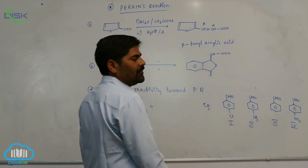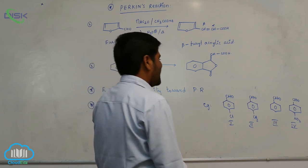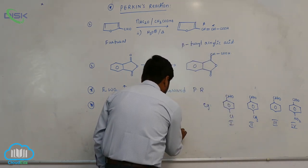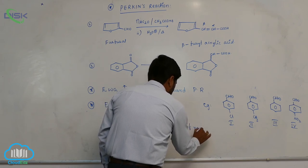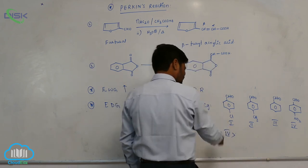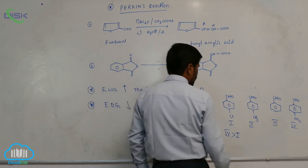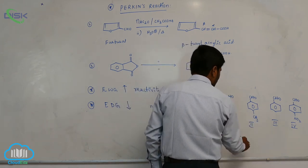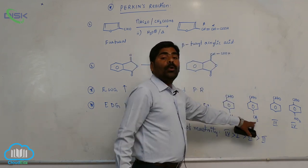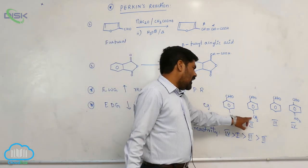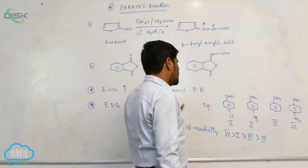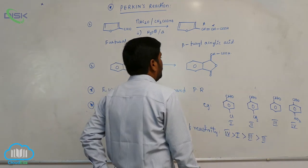Comparing the reactivity of these aldehydes: the nitro group acts as a stronger electron withdrawing group, so para-nitrobenzaldehyde is most reactive. Chloro acts as a minus inductive effect group. The order of reactivity is: para-nitrobenzaldehyde > para-chlorobenzaldehyde > benzaldehyde > para-methylbenzaldehyde, because the methyl group acts as an electron releasing group due to hyperconjugation. This is the order of reactivity in Perkin reaction.